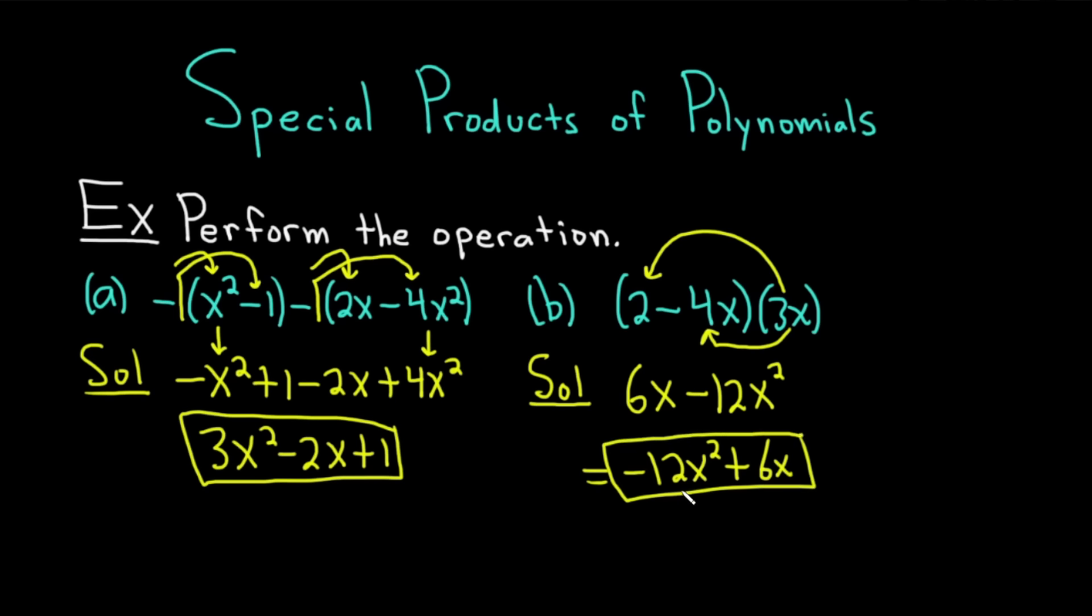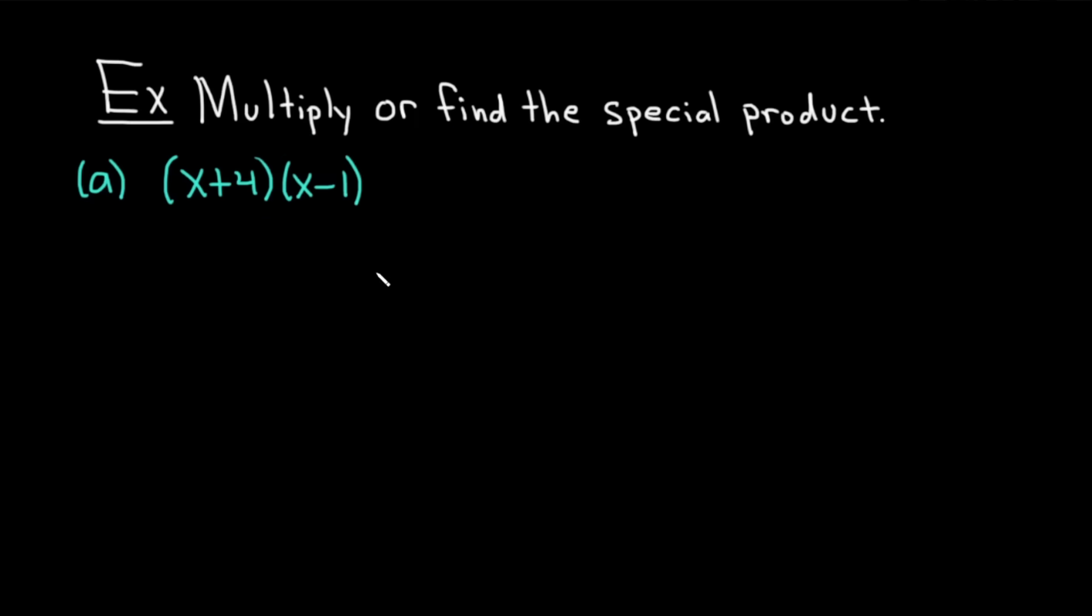All right. Let's do something a little bit different now. So in this example, we're going to be multiplying. Directions say multiply or find the special product. In part A, we have x plus 4 times x minus 1. Let's work through this solution. There is a method that people often use for these problems. It's called FOIL. So I'm going to show you how to do that.